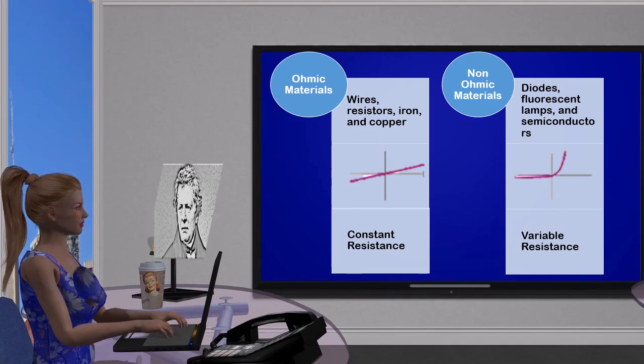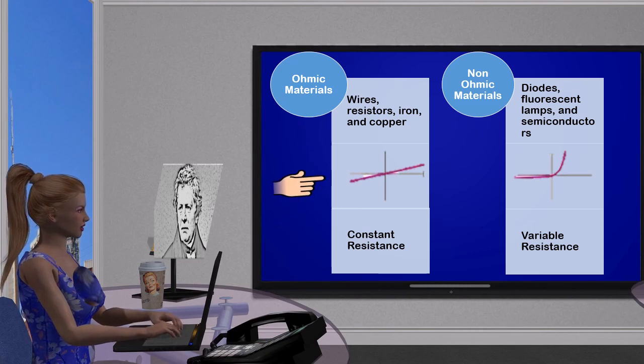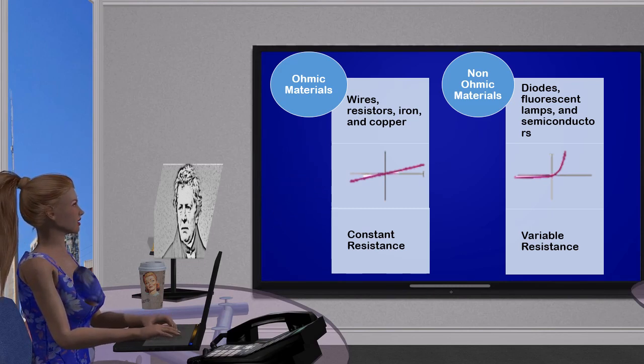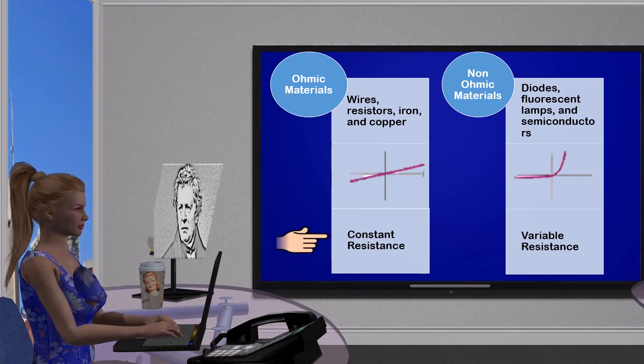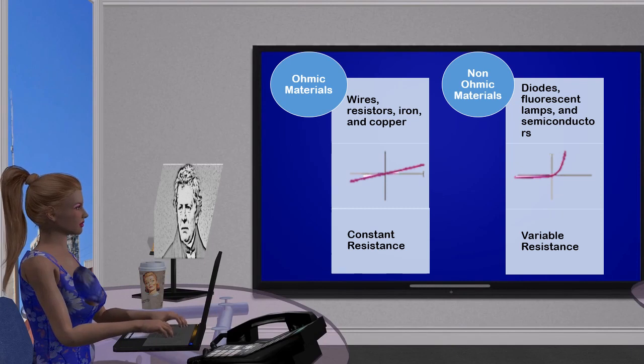All those materials which obey Ohm's Law are called ohmic materials, and the examples are wires, resistors, iron, and copper. The current-voltage graph of ohmic materials consists of a straight line passing through origin. Resistance of ohmic materials is constant.